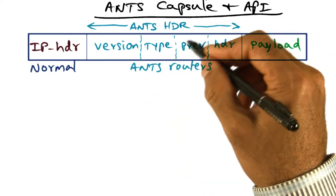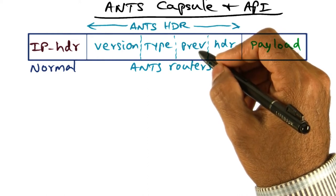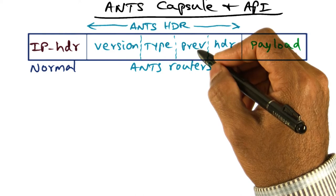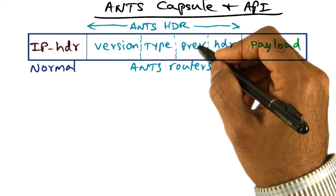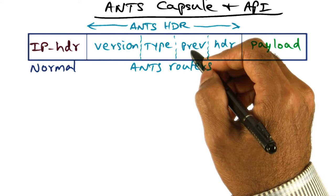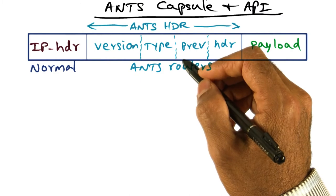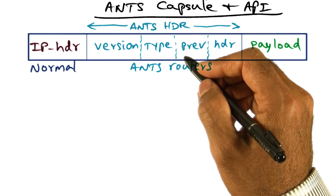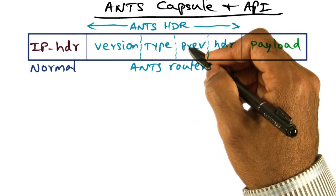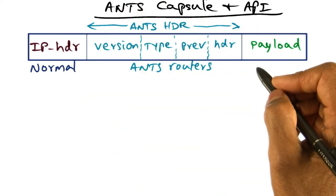And the second field that I said is important is the prev field. And this prev field is the identity of the upstream node that successfully processed the capsule of this type. And this information is going to be useful for us in terms of identifying the code that needs to be executed in order to process this capsule. We'll come back to how these two fields are actually used in processing a capsule once this capsule arrives at an active node.